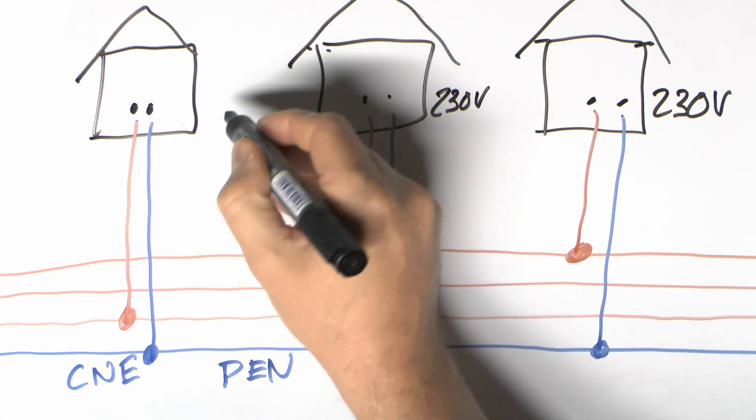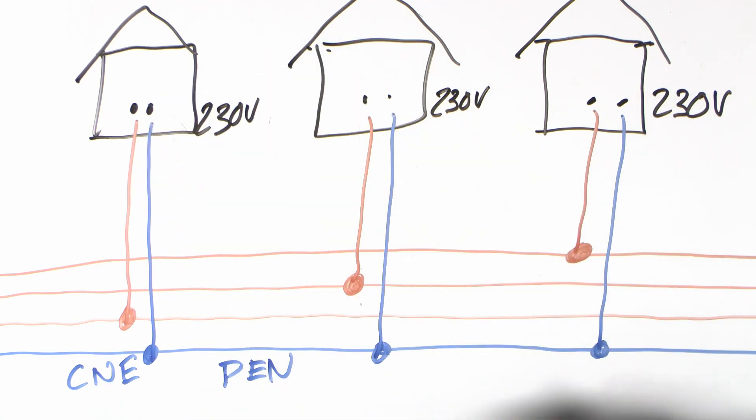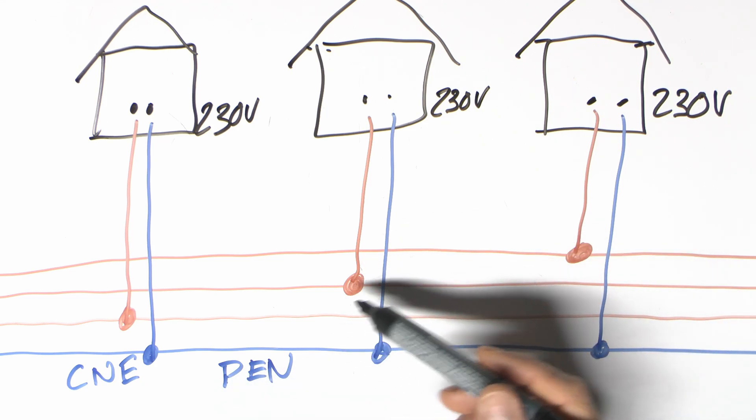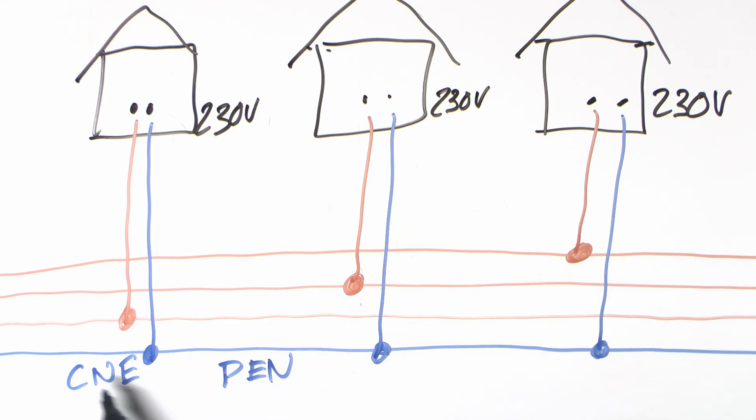Now within each house, so in other words between these two points here, 230 volts, and the same applies here, and the same in here. So as far as the individual properties are concerned, 230 volts, just a single phase coming in. All of this stuff out in the street is hidden and not considered. So a single phase in each property, and you've only got access to one of the line conductors or the phase conductors. Now the crucial thing about three-phase is that these three are not all the same.